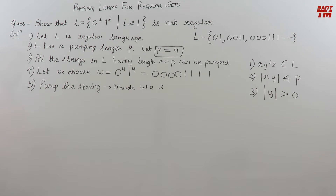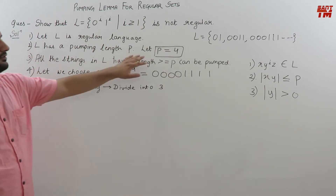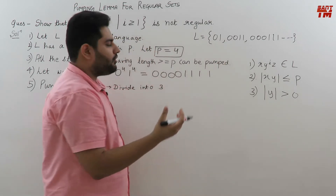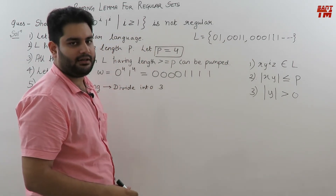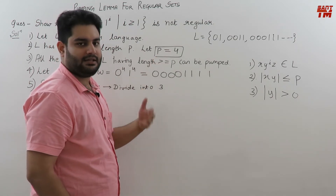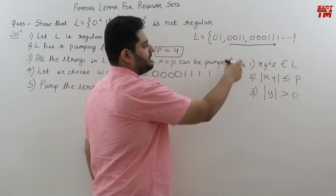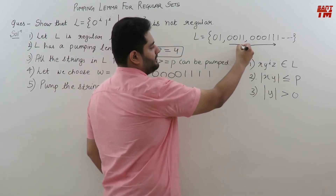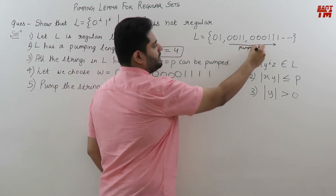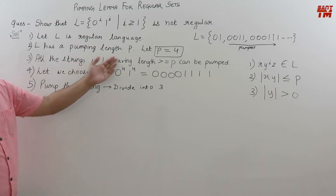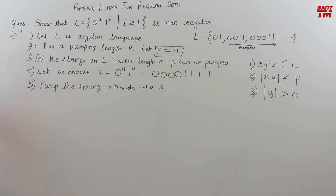Let L be a regular language. Second, L has a pumping length P. We have assumed the pumping length to be equal to 4. That means all the strings having length greater than or equal to 4 can be pumped. If we assume some pumping length, then all the strings that have the same length or greater than that length can be pumped. So all strings from 0, 0, 1, 1 onward, including it, can be pumped because they all have string length greater than or equal to 4. Only 0, 1 will be excluded. So all the strings in L having length greater than or equal to the pumping length can be pumped. These three are our assumptions.